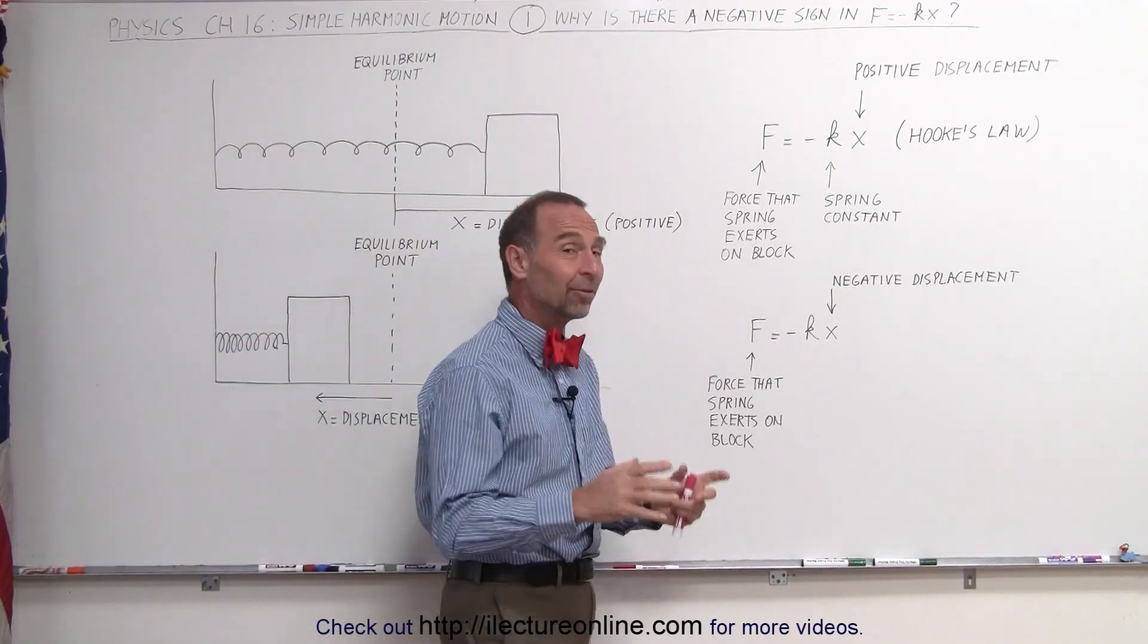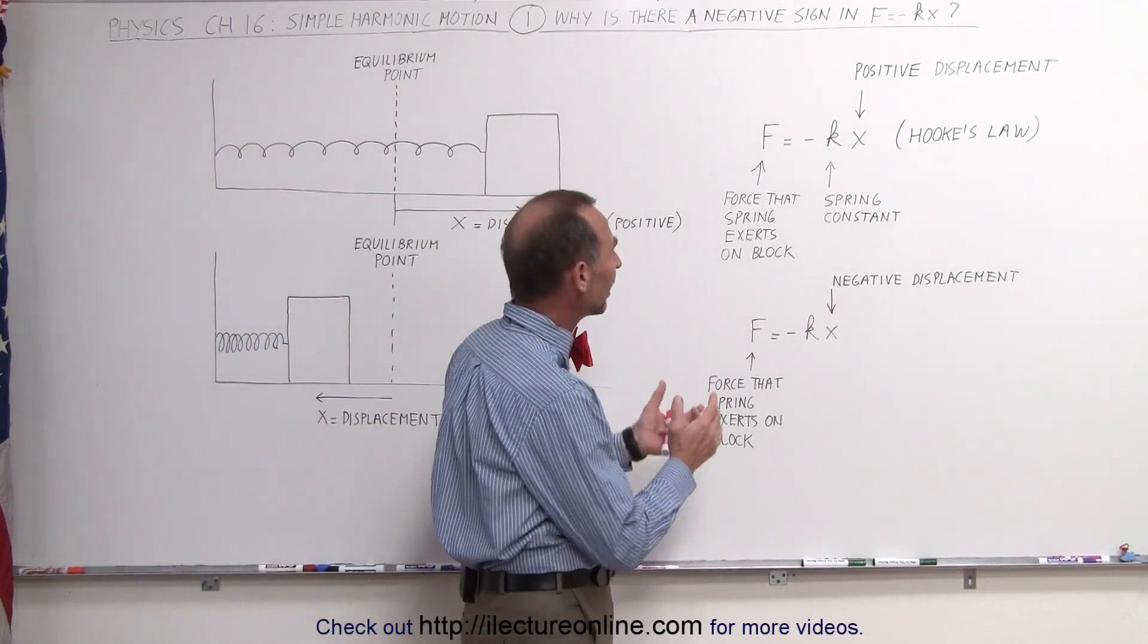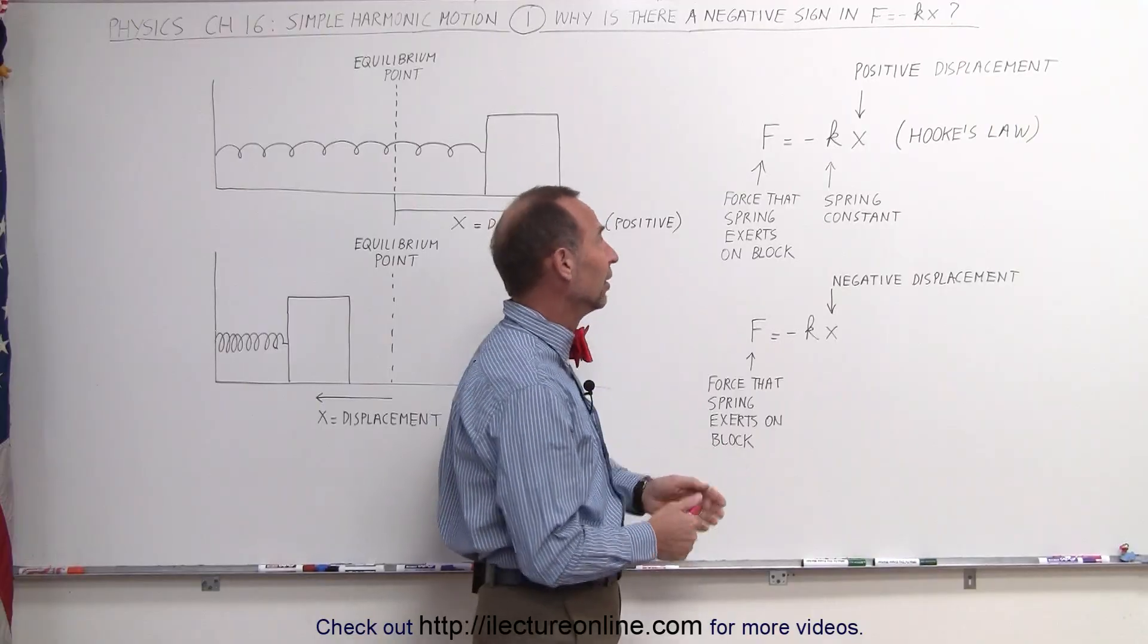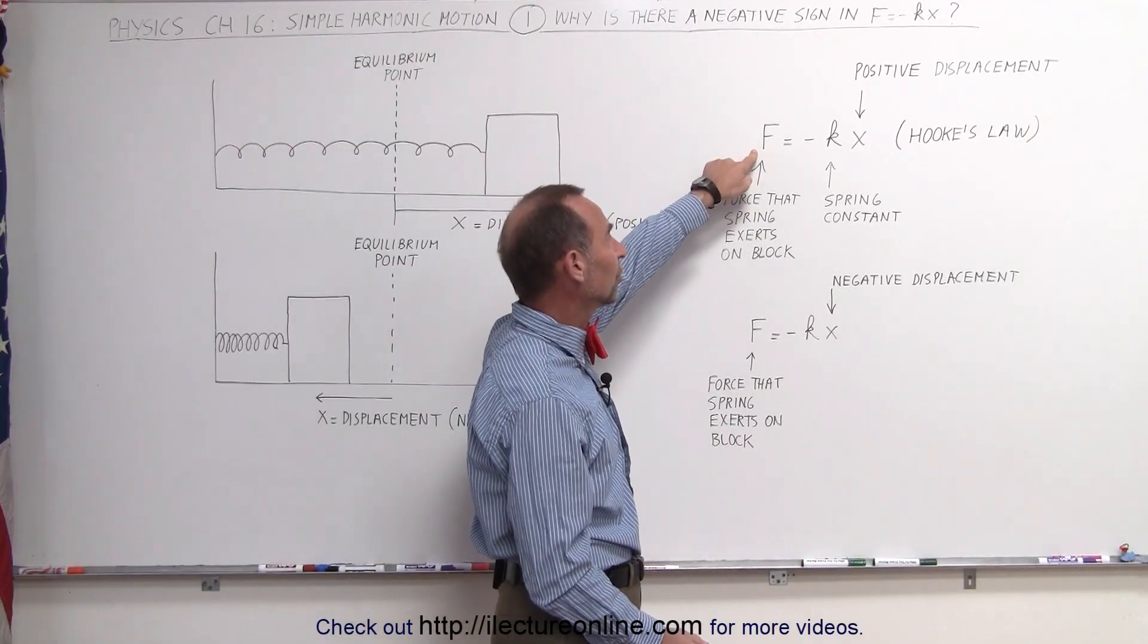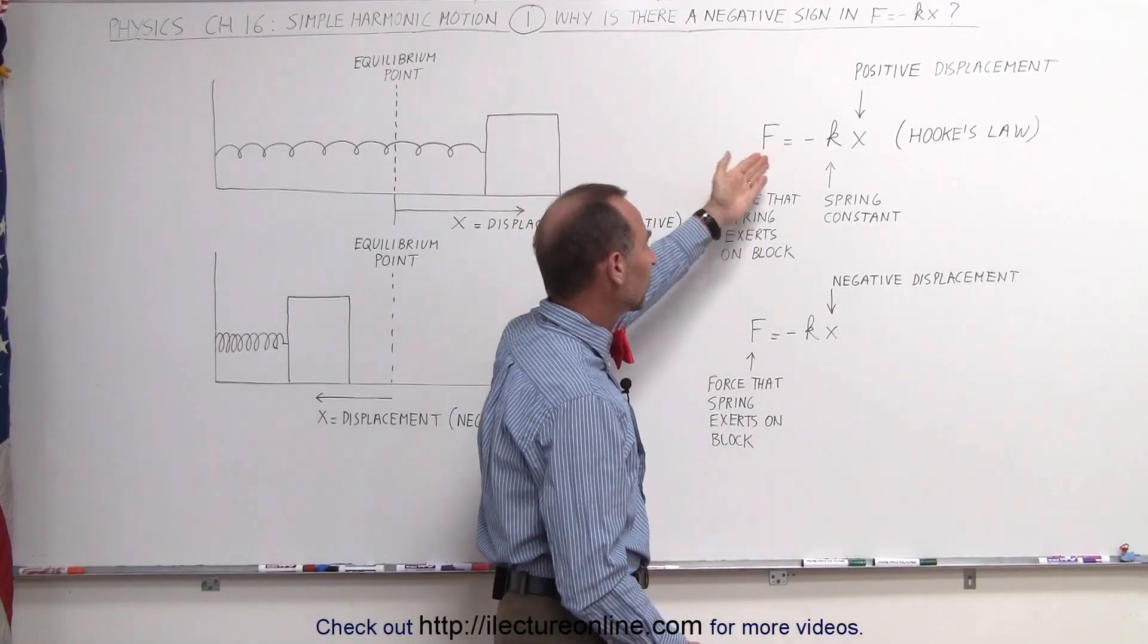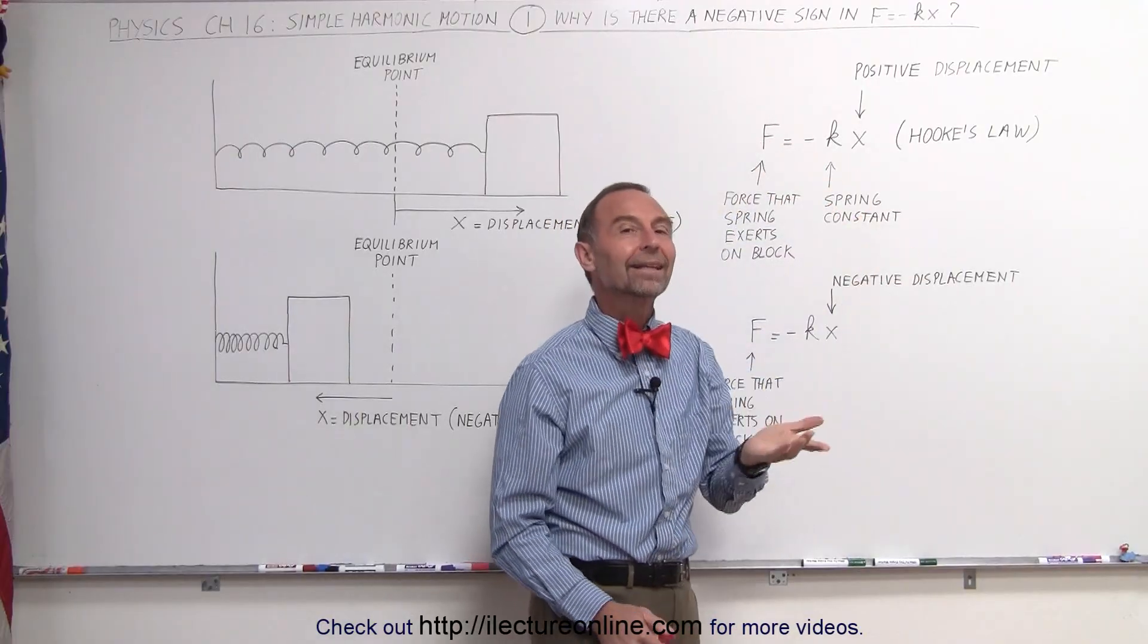A lot of students, including myself once upon a time, looked at that and wondered why in the world do we need a negative sign there? Doesn't it simply tell us that the force that the spring exerts on the block is equal to k times x? Why the negative?